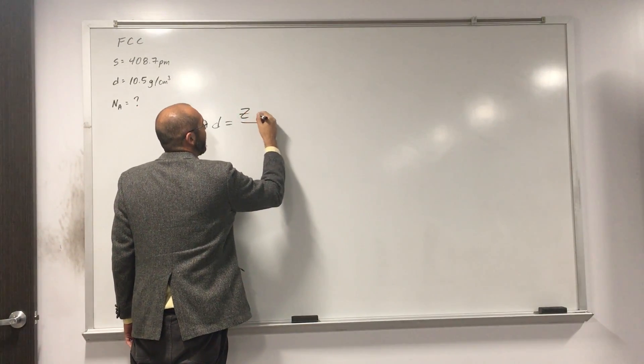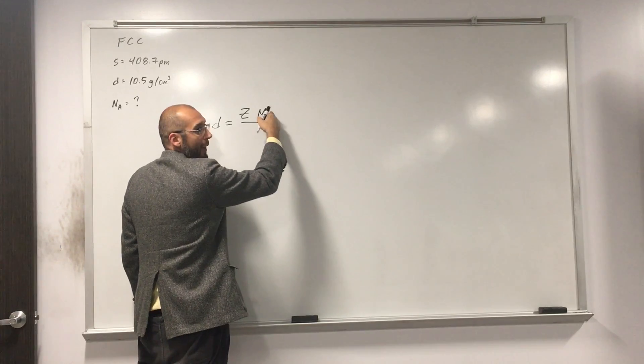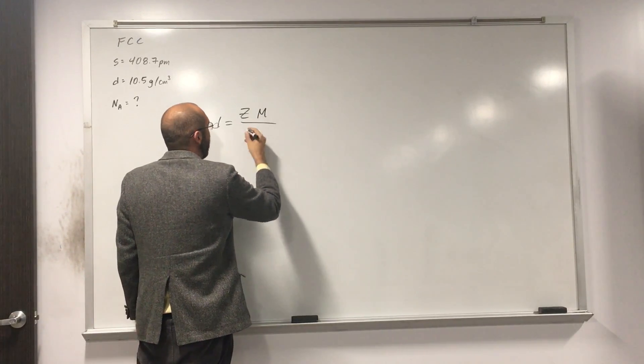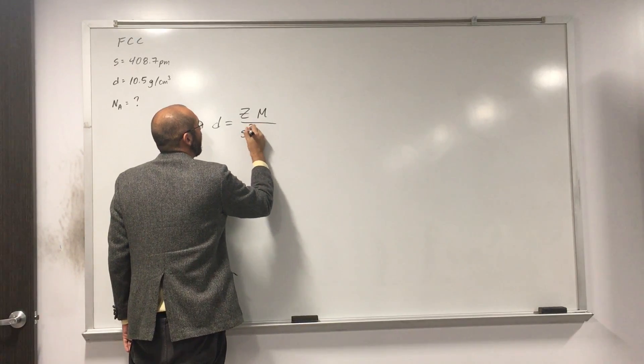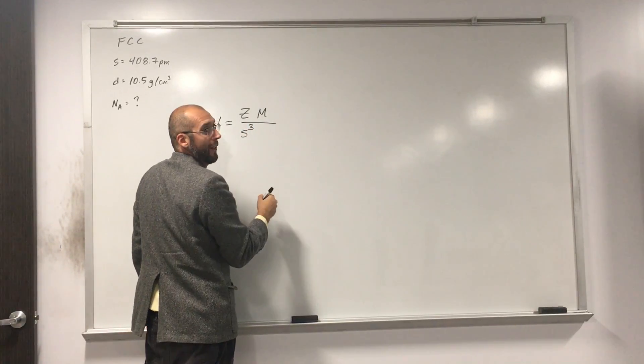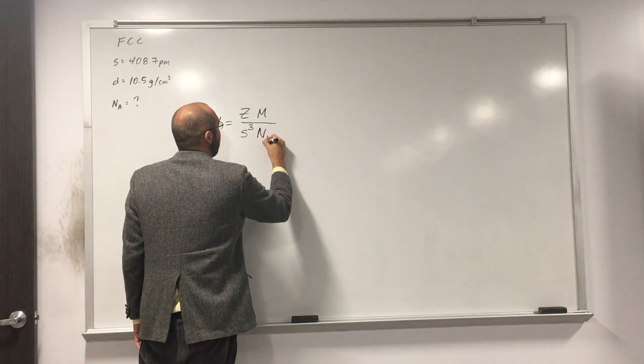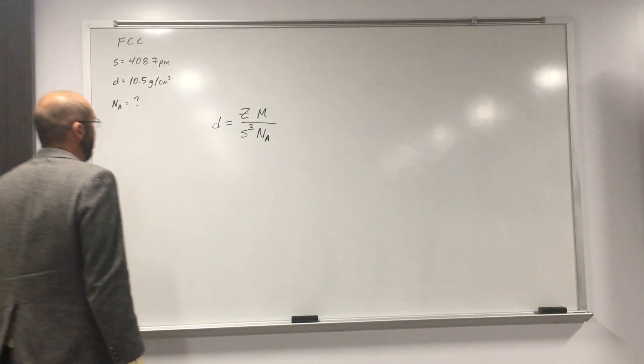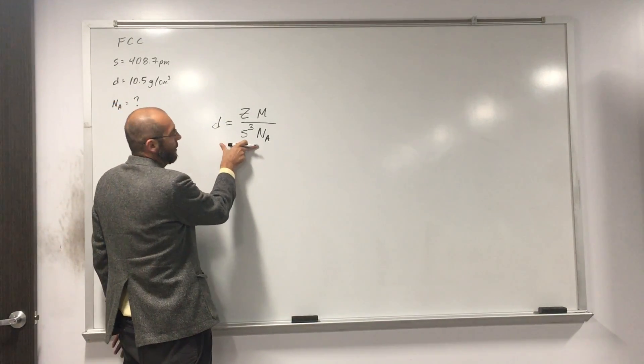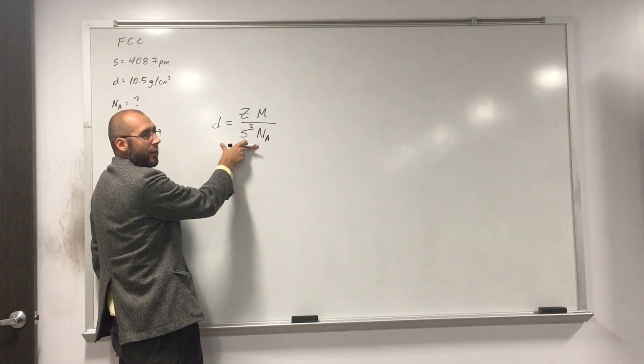Density equals Z M, molar mass, right? So lattice points, molar mass divided by side cubed and Avogadro's number. So what are we solving for? Avogadro's number, right? So we're going to have to rearrange this equation to solve for that.